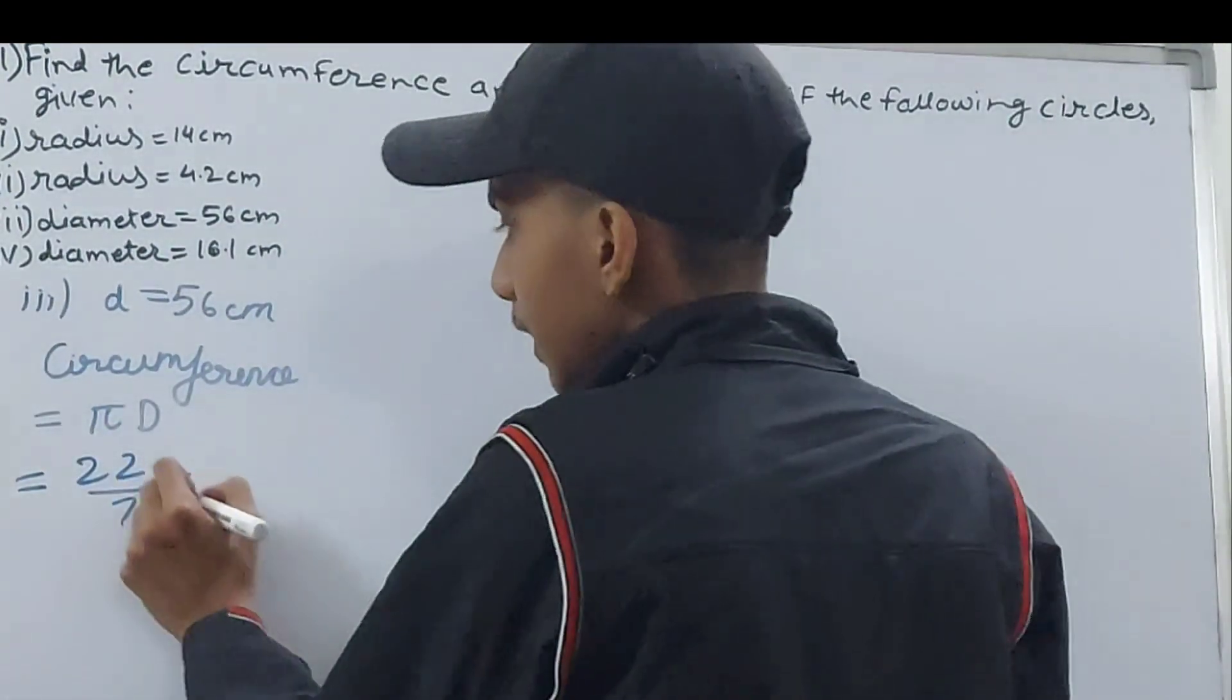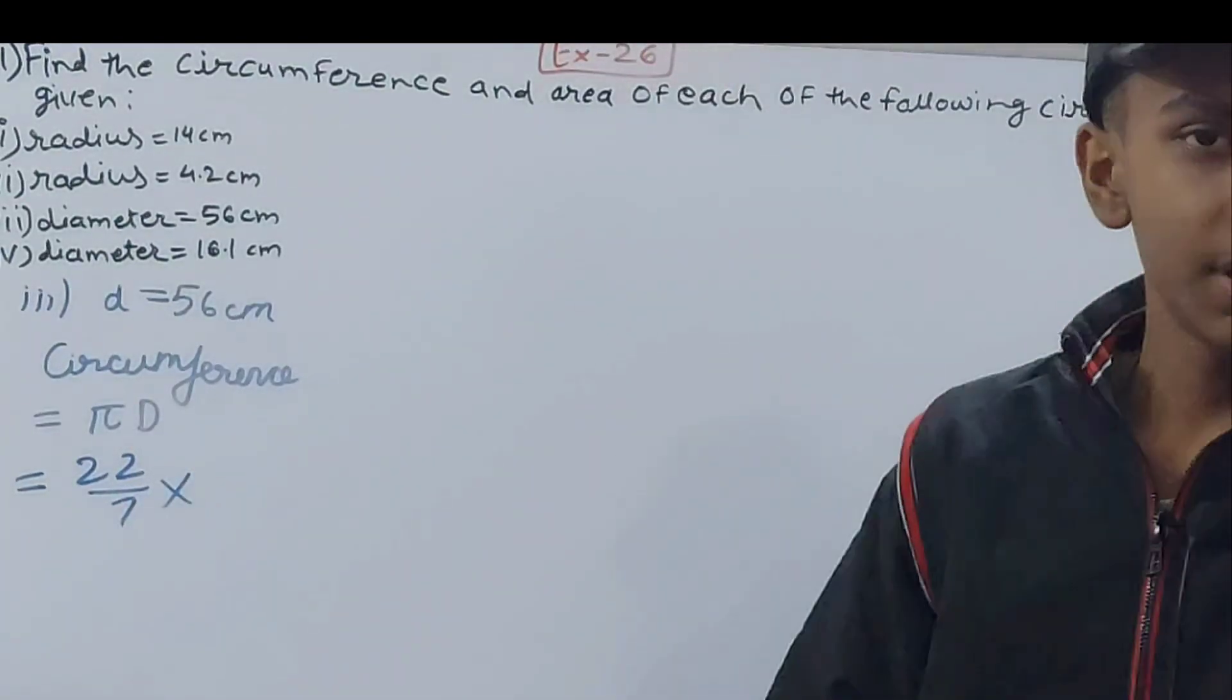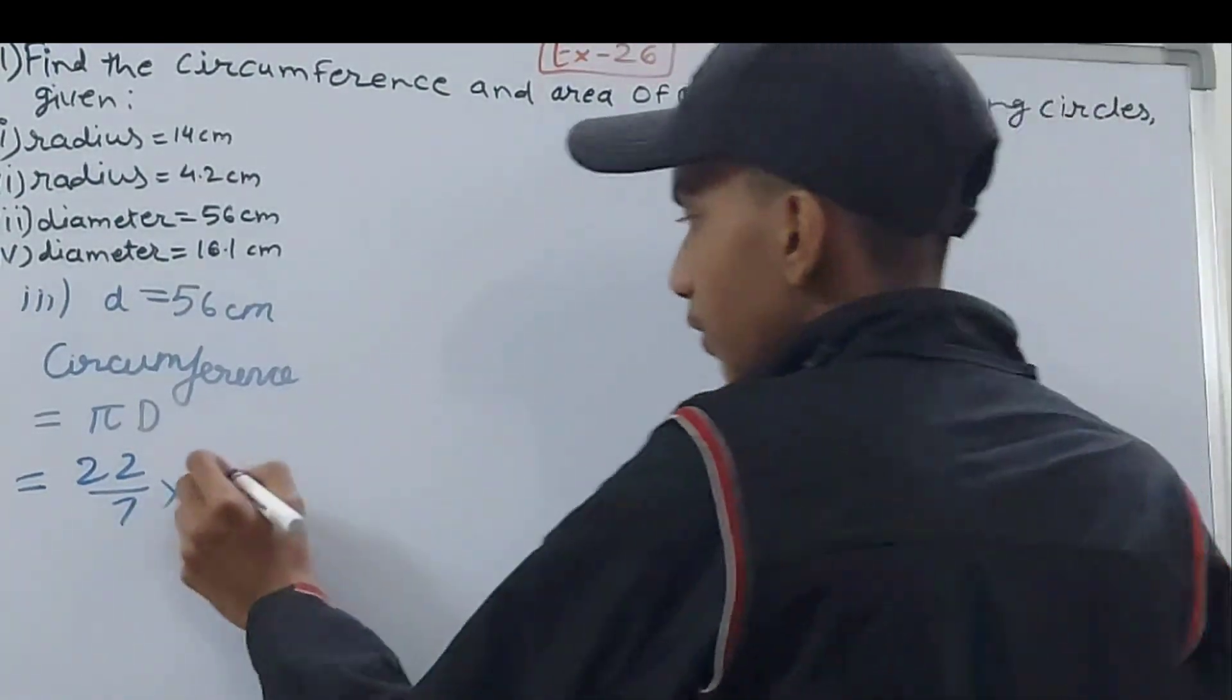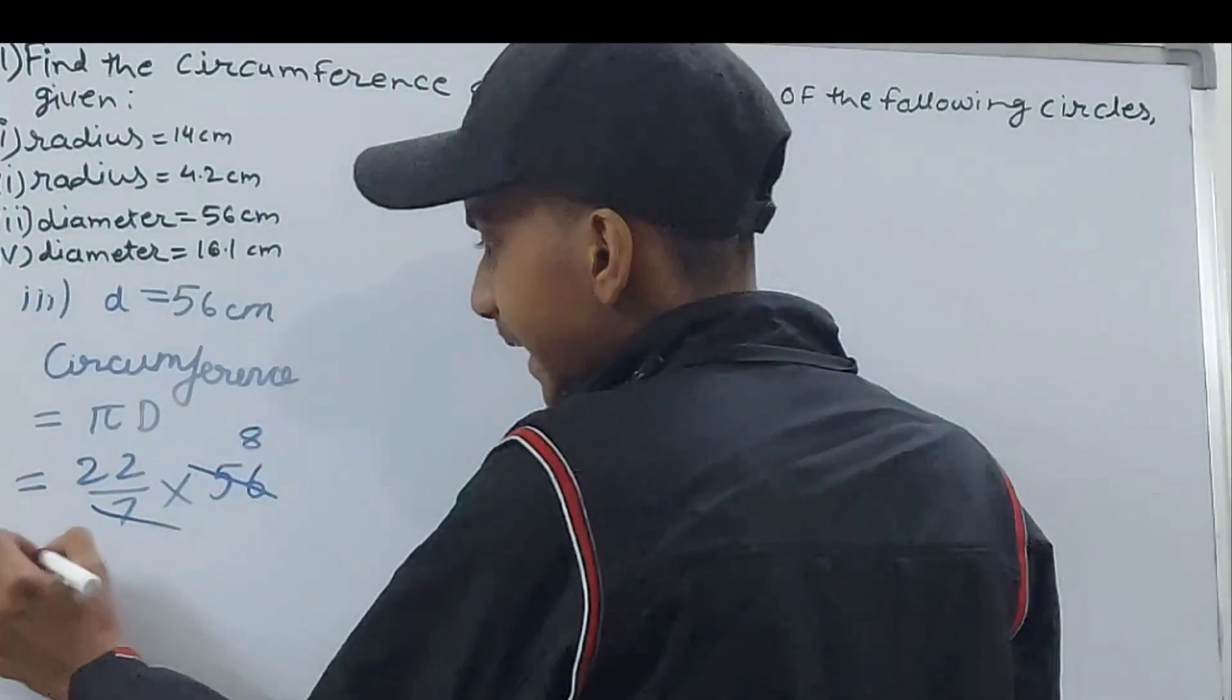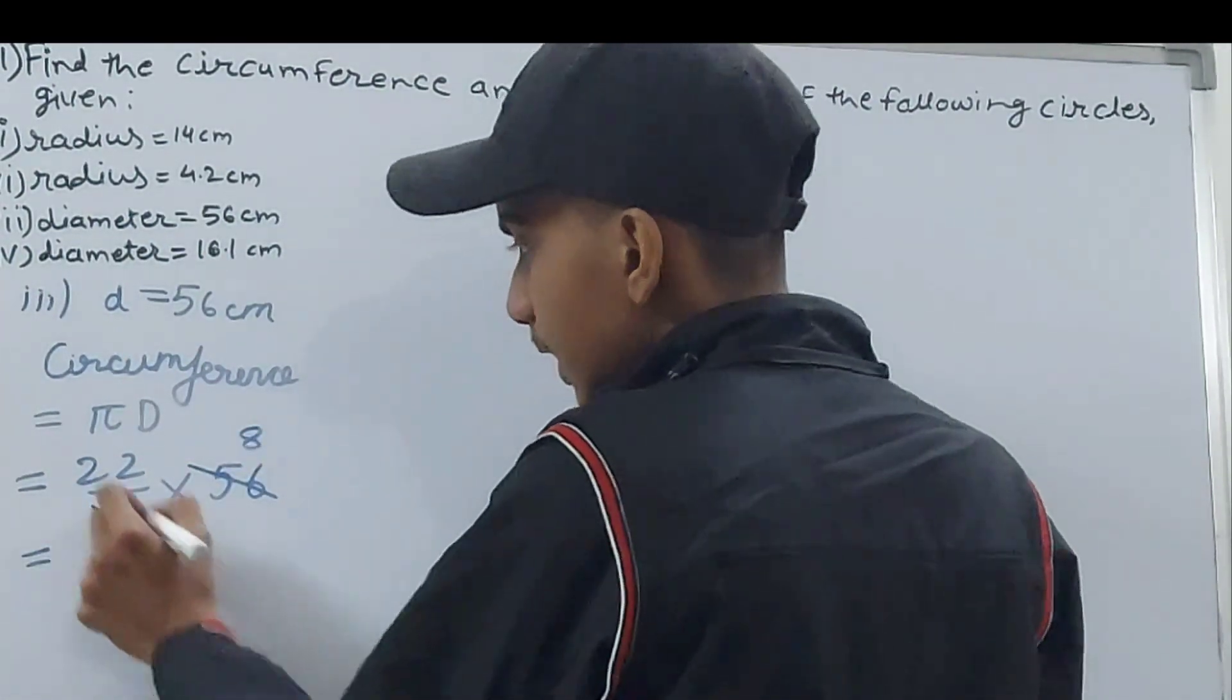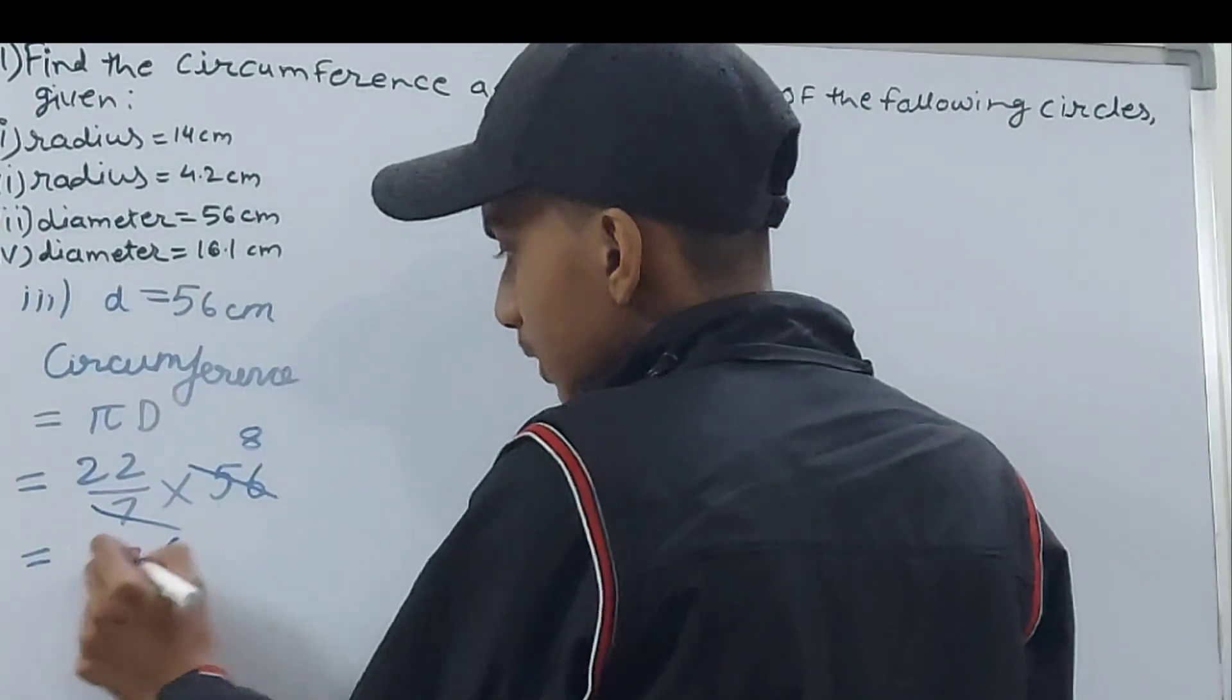In place of π we can put 22/7 × diameter, diameter is 56 centimeters. 7 and 56 will go 8 times, 8 × 2 = 16 and 1 is 17, 176 centimeters. That's the circumference of the circle.